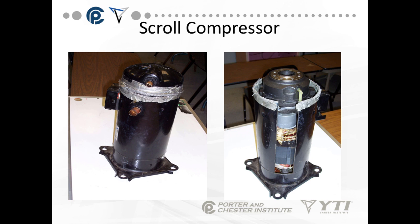This is an example of a cutaway of a scroll compressor. The top comes off; you have your scroll component at the top, some equalization lines, and your whole motor component down at the bottom. This whole area is surrounded with refrigerant.